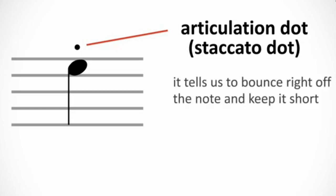Staccato dots tell us to bounce right off the note and keep it short when playing it. If you see staccatos on longer notes that might ordinarily get held, performance practice frequently tells us to hold the note for only half its value, but that may depend on your instrument, the piece, the speed, and so on.